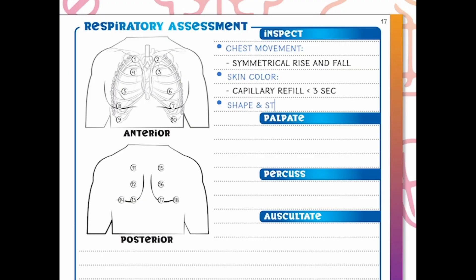We're also looking at the shape and structure of the chest: are there any dents or bulges, lacerations, or scarring — as some patients may have had a chest tube in the past, lung cancer removal, potential breaks, fractures, or deformities in their chest wall?